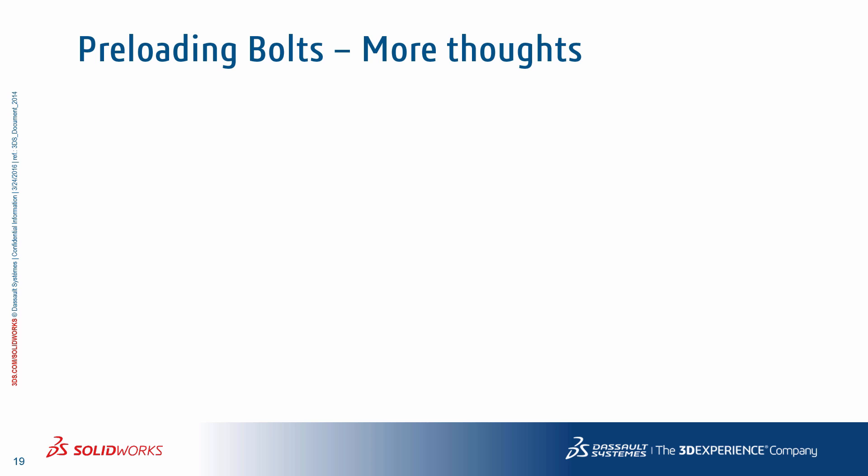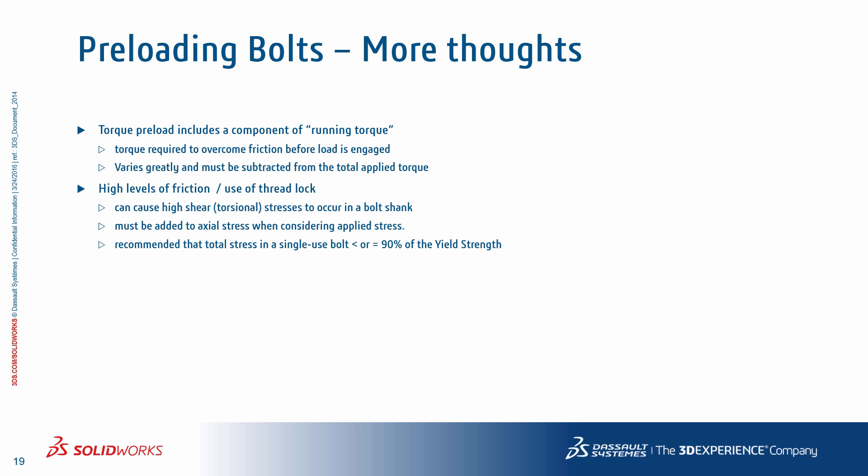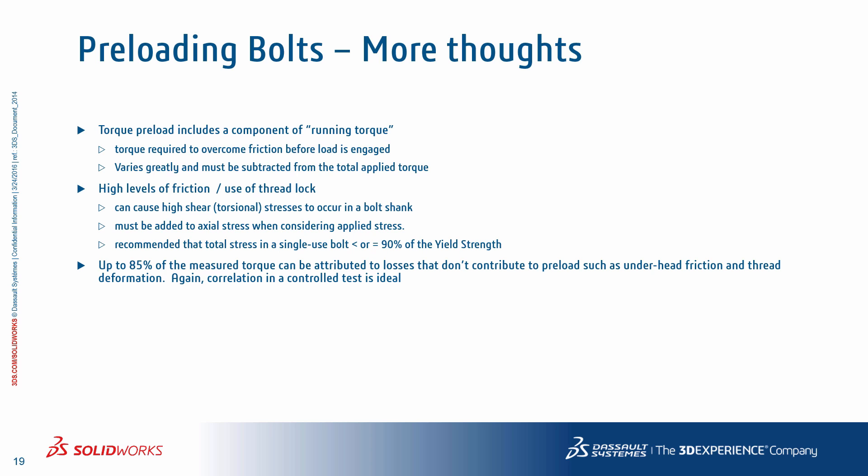Some more thoughts on preloading bolts: there are a number of torque components that come into play when a bolt is preloaded. There's a running torque which accounts for general friction between the bolt and its threaded counterpart, adding a component of torque, and that running torque must be subtracted from the preload torque. Various factors can cause the friction or apparent friction to be smaller or larger than expected. Up to about 85% of the measured torque when preloading a bolt can be attributed to losses that don't create axial preload, such as underhead friction, thread deformation, and similar effects.